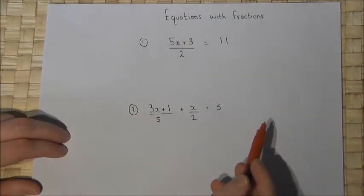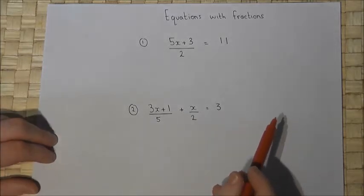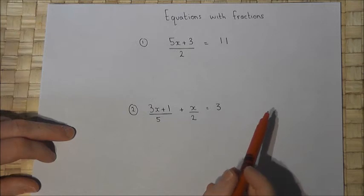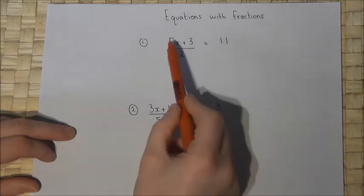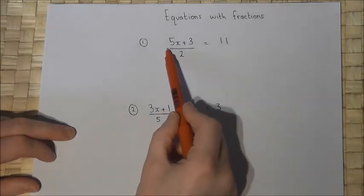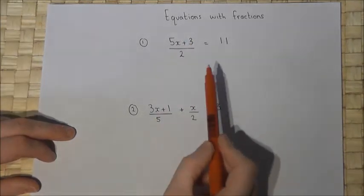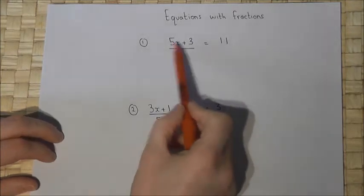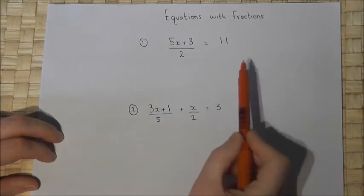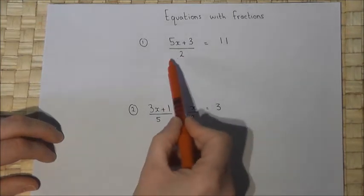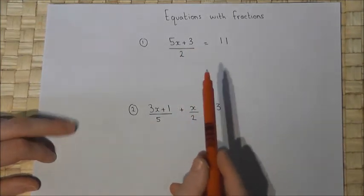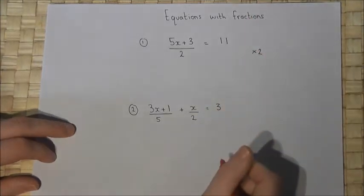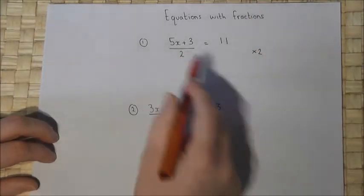In the next part we review how to solve equations with fractions. Here we have (5x + 3) all over 2 equals 11. When we have an expression divided by a number, to cancel off the 'over 2' we multiply both sides of the equation by 2.